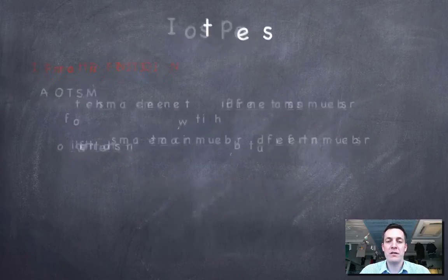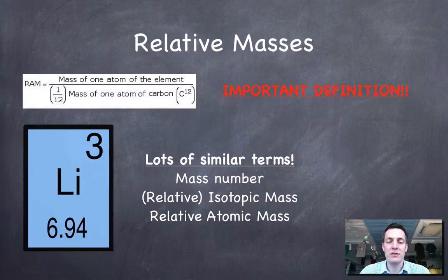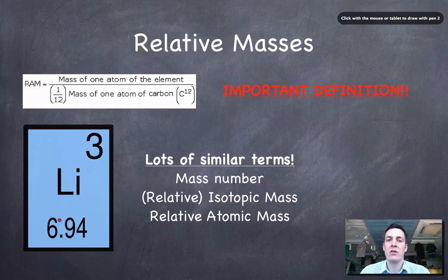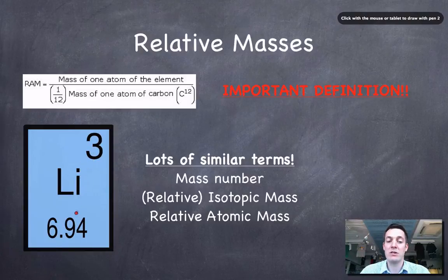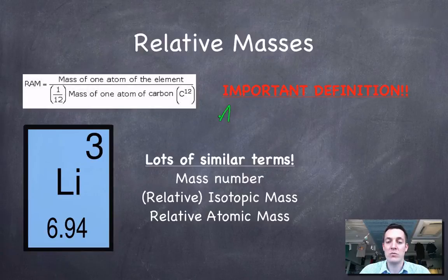Now we're going to start looking at what we mean by relative masses. And this comes back to what we were saying earlier about this non-integer value of what seems to be a mass number in the periodic table. So I picked a particular element here — lithium. And we're saying that lithium is defined as having three protons, so the smaller of the two numbers is three. Notice that in a periodic table, these numbers can be put in all sorts of different places, not necessarily in the same conventional places as we had with the AZ system.